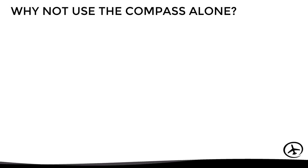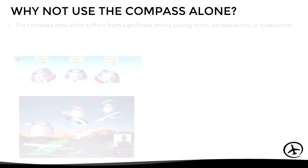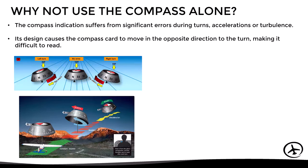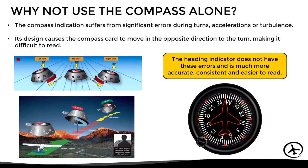At this point we might wonder: if we need to constantly align the heading indicator with the compass, why not use the magnetic compass alone? The answer is that the compass indication suffers from significant errors during turns, accelerations, maneuvers, or turbulence. Apart from this, its design causes the compass card to move in the opposite direction to the turn, making it difficult to read, especially under high workloads. The heading indicator does not present these errors and is much more accurate, consistent, and easier to read.